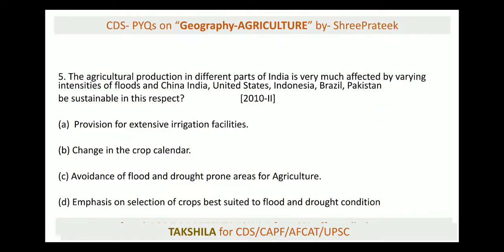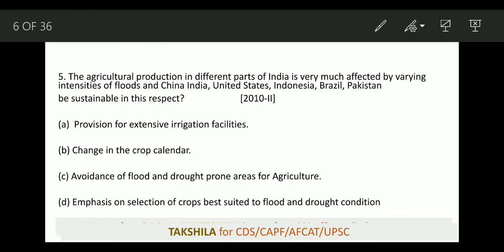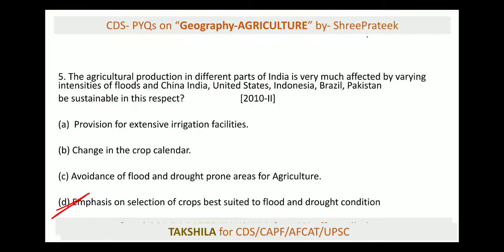Next: agriculture production in different parts of India is very much affected by varying intensity of floods. The question asks what measures the government should take to overcome this flood problem. The answer should be option D: emphasis on selection of crops best suited to flood and drought conditions, along with provision for extensive irrigation facilities and avoidance of flood and drought prone areas for agriculture.